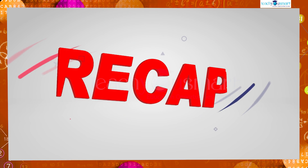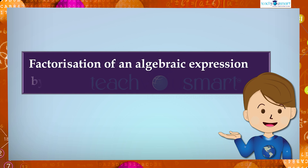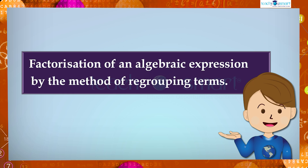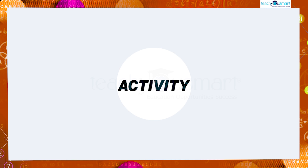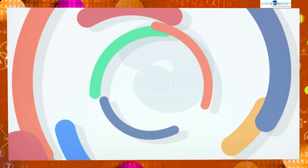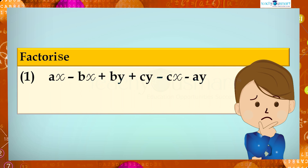Let's recall what we discussed today: factorization of an algebraic expression by the method of regrouping terms. Before winding up, let's check how much you understood by doing an activity. Factorize: first, ax - bx + by + cy - cx - ay; second, 2ab + 7 + 2b + 7a.